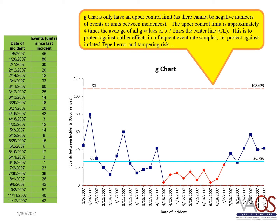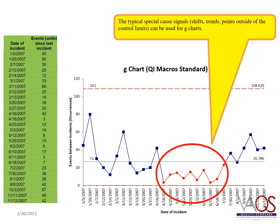G-charts behave very similarly to other SPC analyses you have previously learned. The typical special cause signals used for standard SPC analyses can also be used here, including shifts, trends, and points outside of the control limits. Here, a downward shift is identified, indicating a decrease in the number of events observed between incidences.